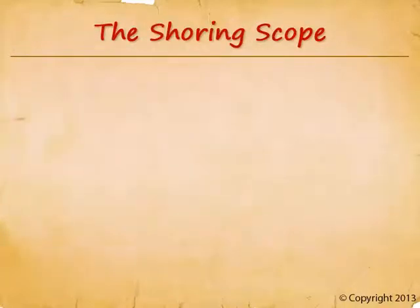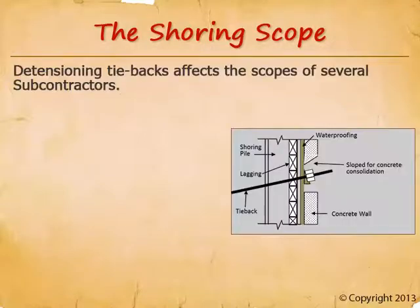Let's begin our training by talking about the shoring trade. Many cities and private owners require detensioning tiebacks, primarily because tensioned cables pose a safety hazard if hit when trenching in the future. Tiebacks are temporary structures usually provided by a design-build shoring subcontractor, so they won't be on the drawings. The shoring subcontractor is not the only party involved, so work needed by other trades won't be on the drawings either. When something isn't on the drawings, bidders won't include it unless specifically directed to — and this is where the bid instructions come in.